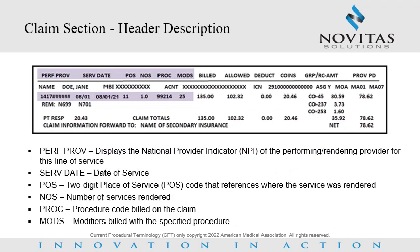Claim section header description. The claim section header will display the following information. PERF PROV displays the National Provider Indicator, or MPI, of the performing or rendering provider for this line of service. SERV date indicates the date of service. POS stands for the two-digit place of service code that references where the service was rendered. NOS identifies the number of services rendered. PROC indicates the procedure code billed on the claim. And MODS stands for modifiers billed with the specified procedure.